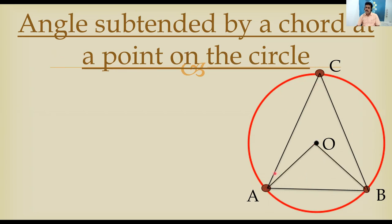Join the chord endpoints to the center also. Suppose the angle subtended by chord AB at the center — angle AOB — is 100 degrees. Now what is the angle subtended by the same chord at point C on the circle? It is always half of the angle at the center. Since AOB is 100 degrees, angle ACB is 50 degrees.